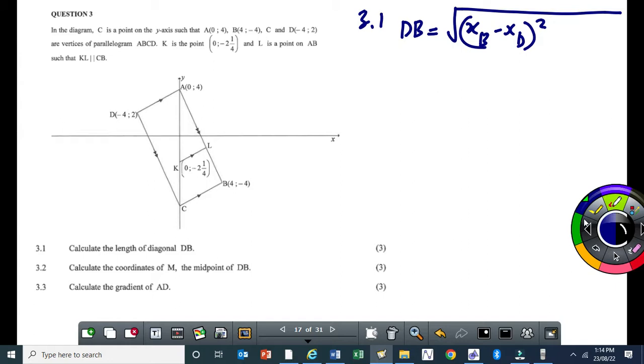It's better to use the letters representing the end point of the line segment. So xB minus xD, where did I get the B and the D? Because the question asked me to find the length of DB. So I'm saying the x value at B minus the x value at D squared, and we add the y value at B minus the y value at D squared.